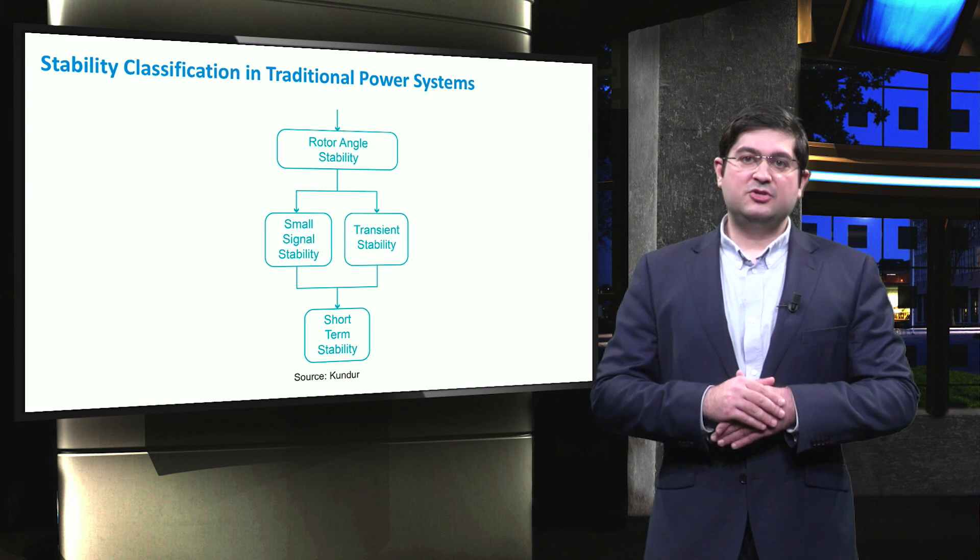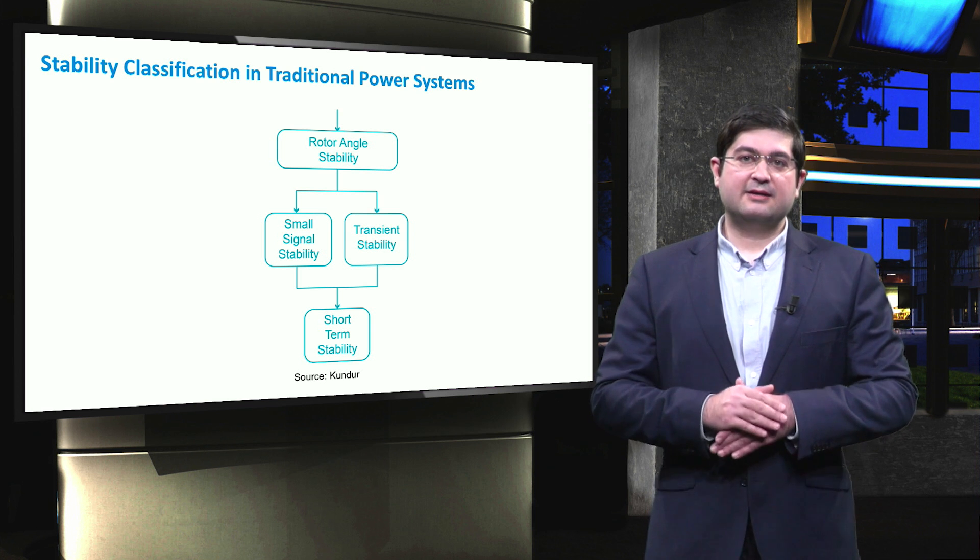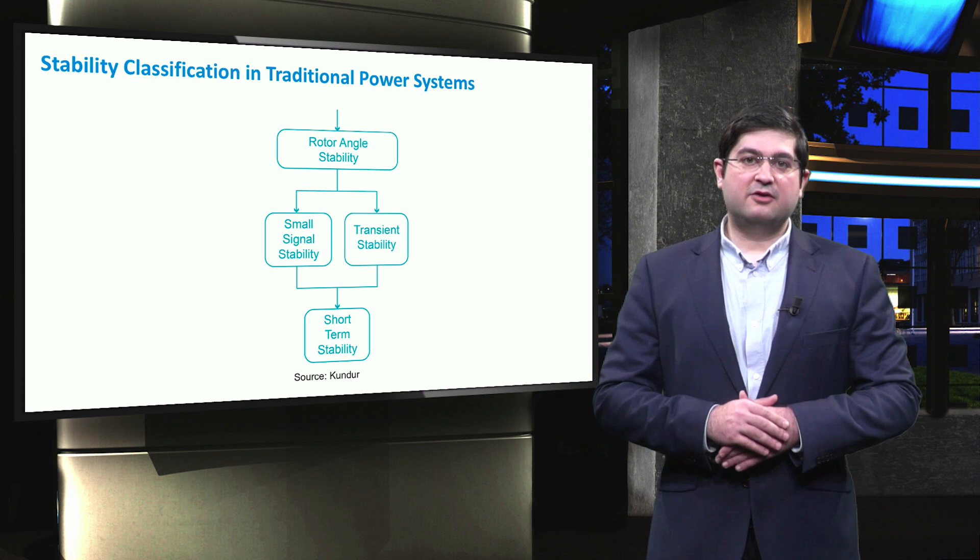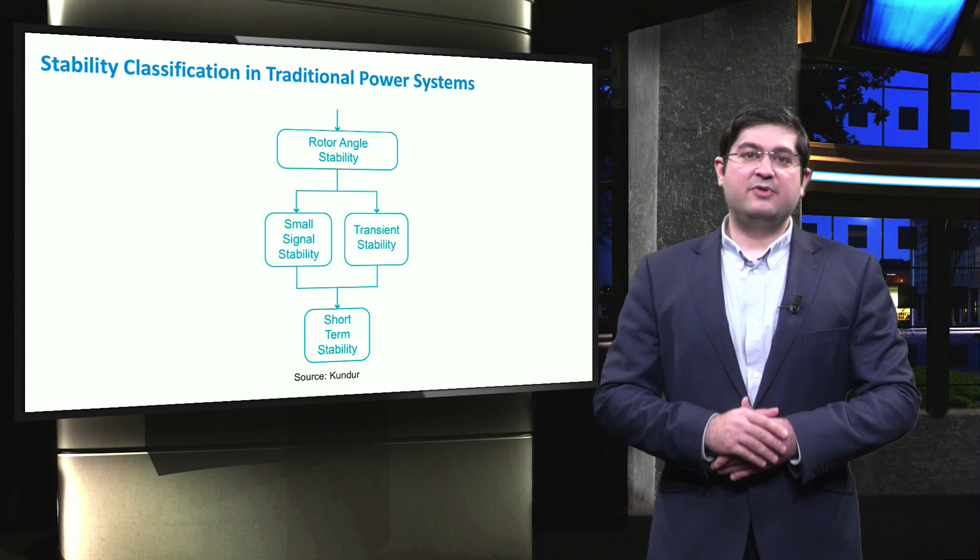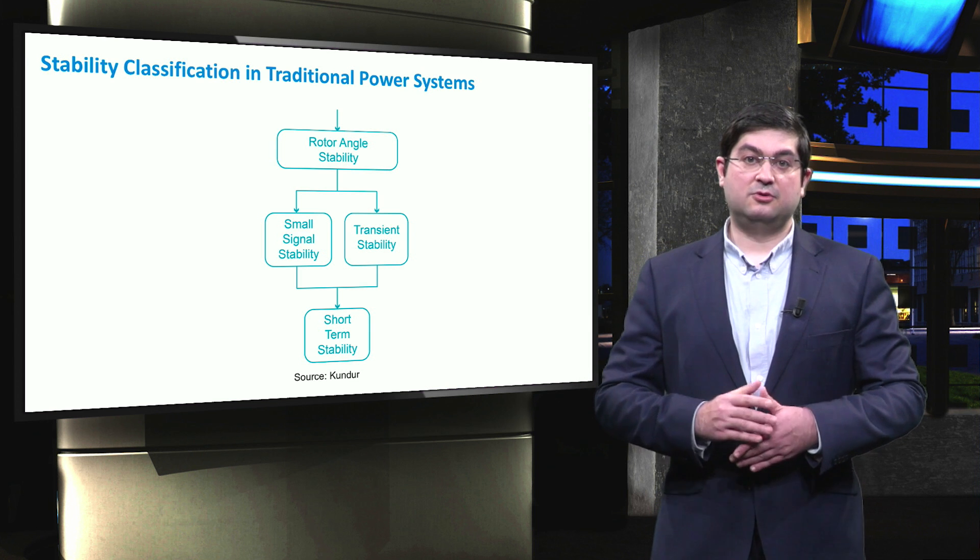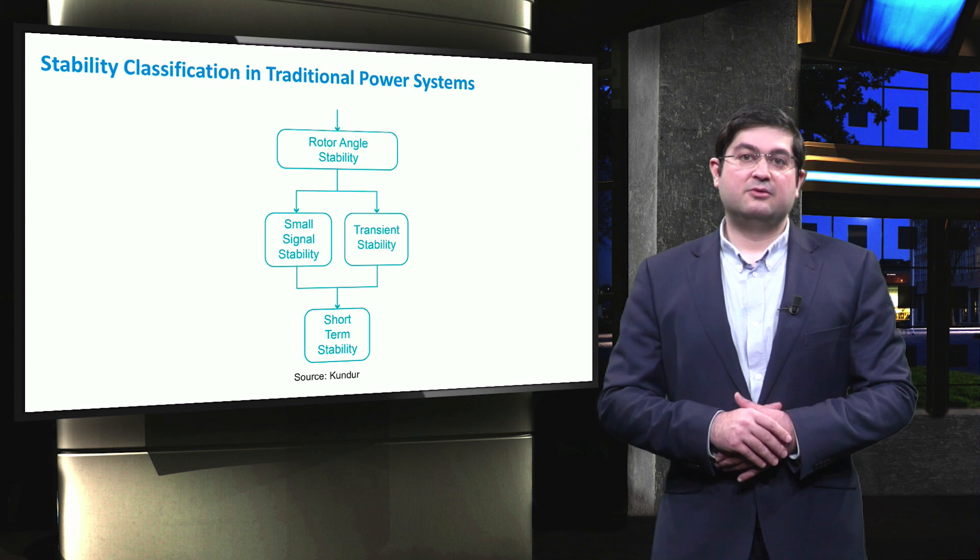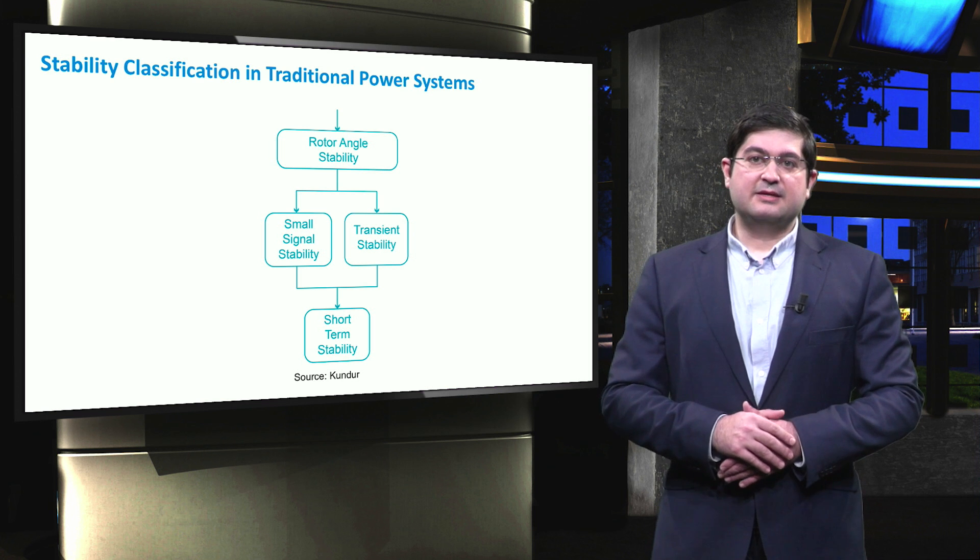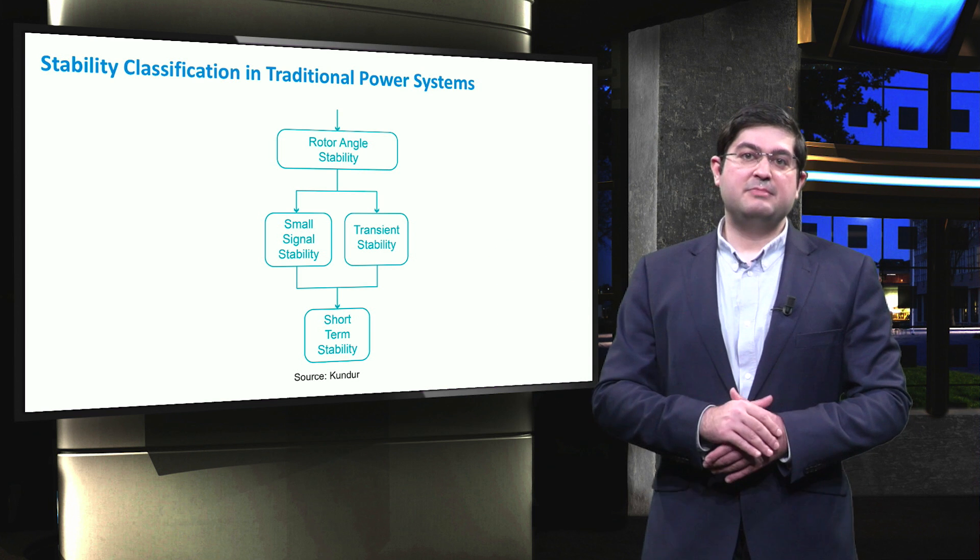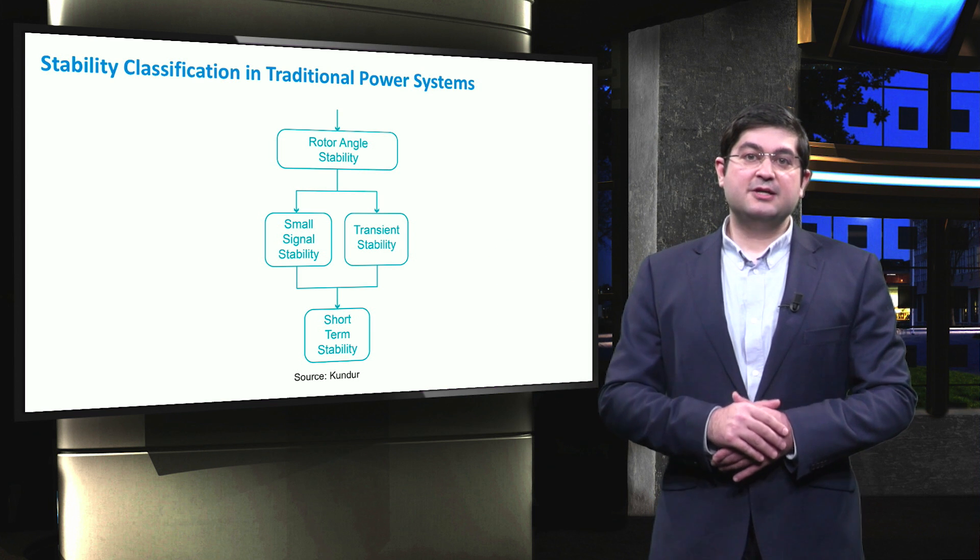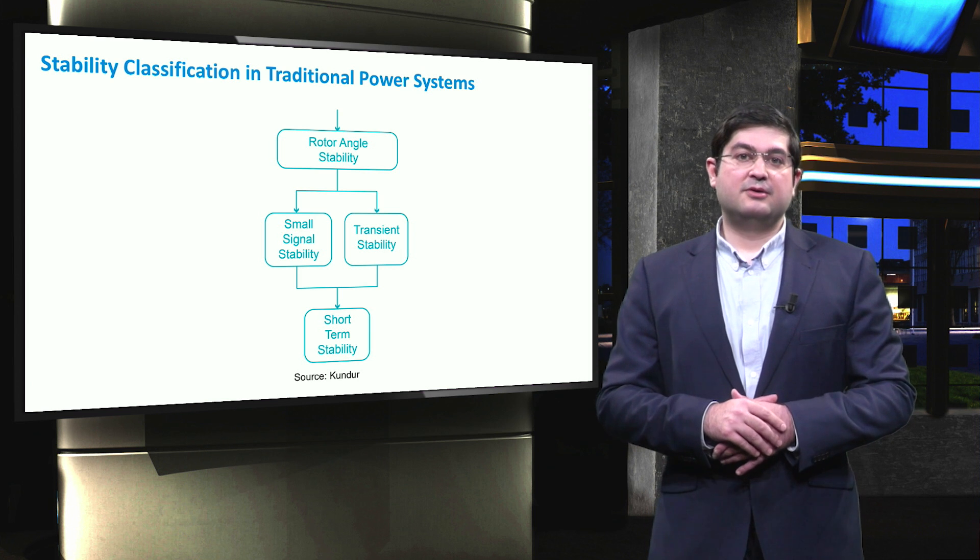In this slide, we show the first group, which is rotor angle stability. Rotor angle stability is defined as the ability of interconnected electrical grids to remain in synchronism when they are subject to disturbances or faults, for instance, single phase or three-phase to ground faults. Rotor angle stability is the shortest stability phenomena for about few hundreds of milliseconds, which in general is divided into either a small signal stability or transient stability.